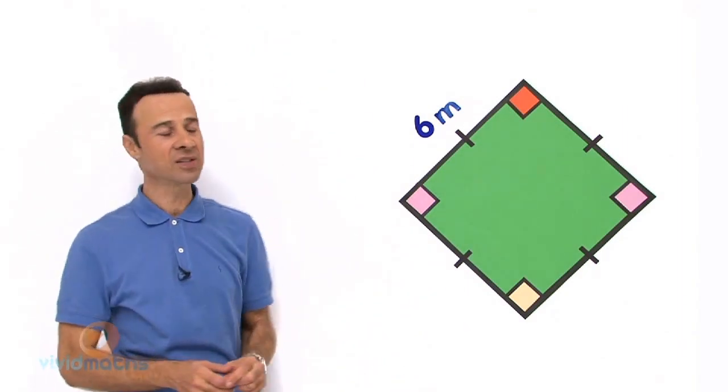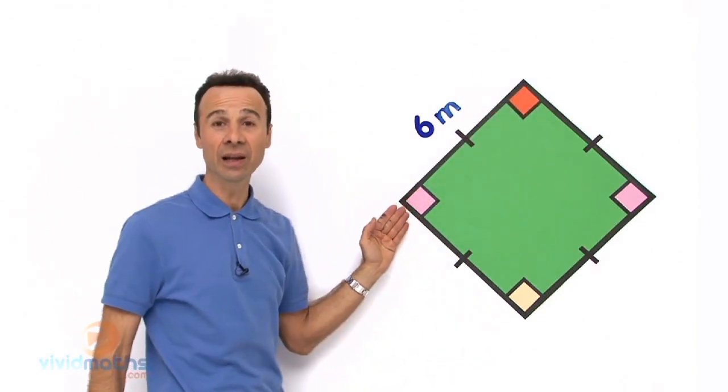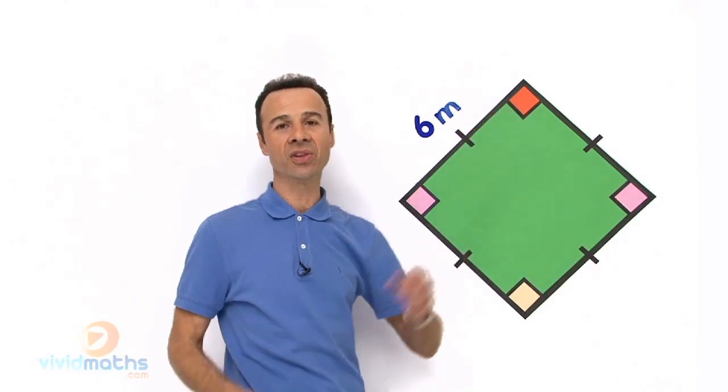So we are only given one dimension, that is up here, 6 meters. So if this is 6 meters across there, then clearly all the other dimensions are the same.